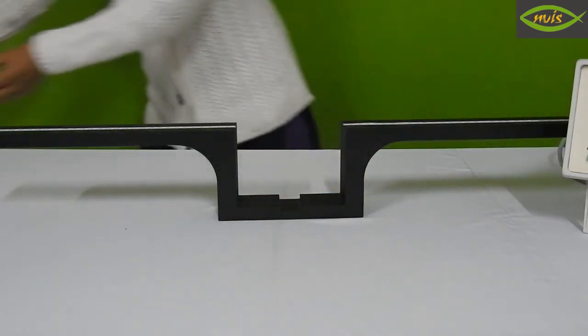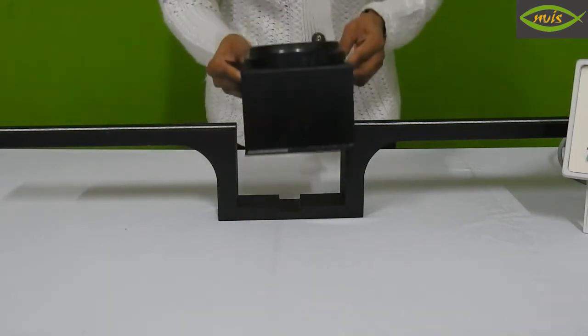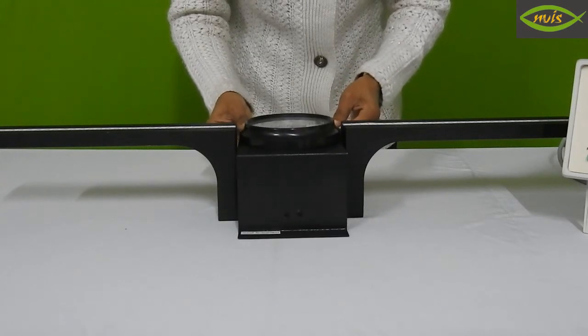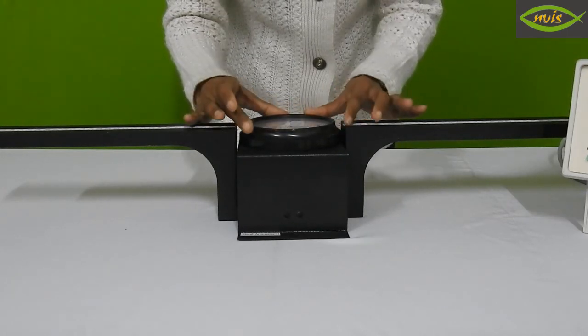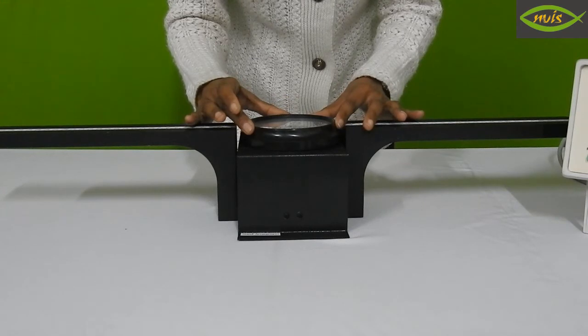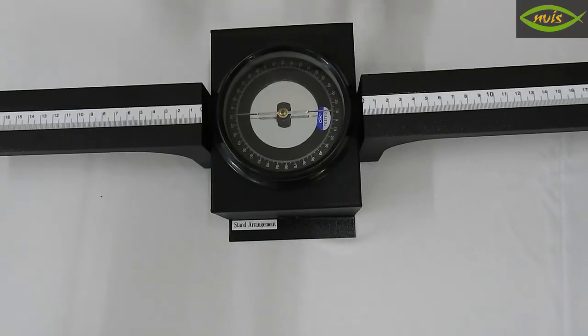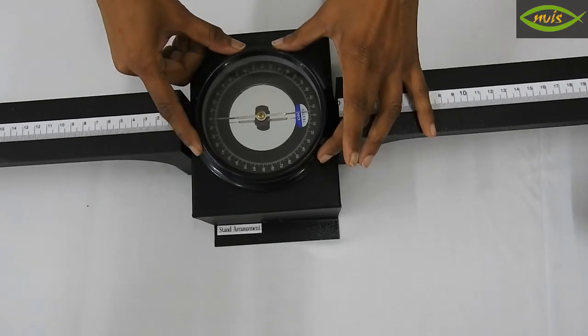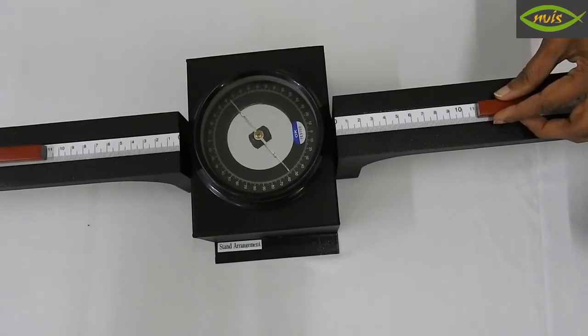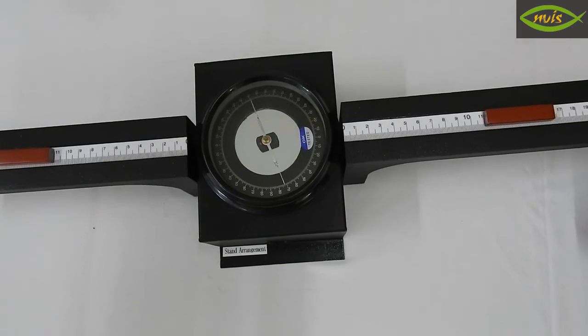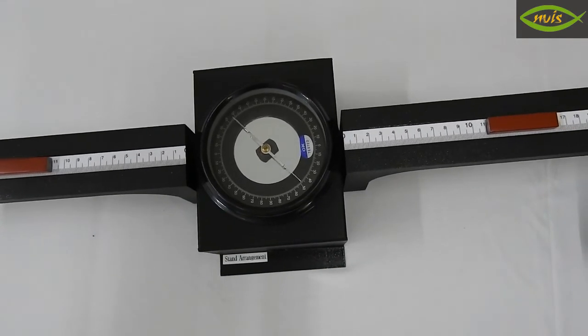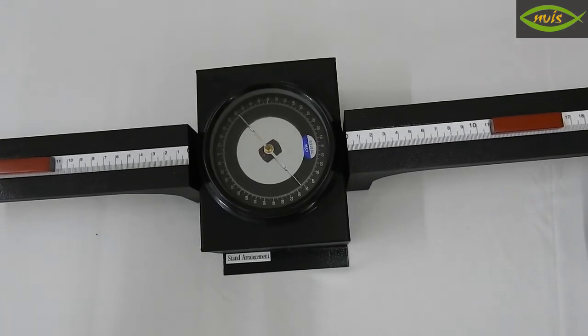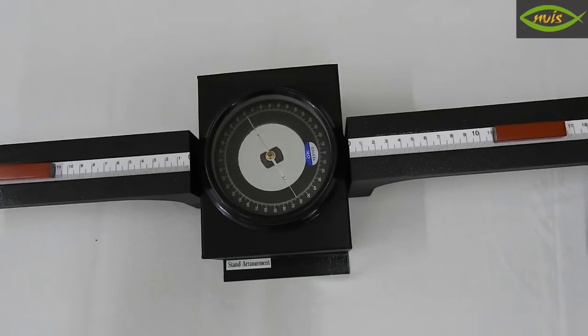Place magnetometer arrangement in between stand such that its center lies on the center of the stand arm. Take care that the position of stand should not be disturbed. Rotate magnetometer and adjust the needle to read 0 degree. Now place magnets at a distance equal to R1 and R2 as previous polarity adjusted. The pointer deflects along the scale.